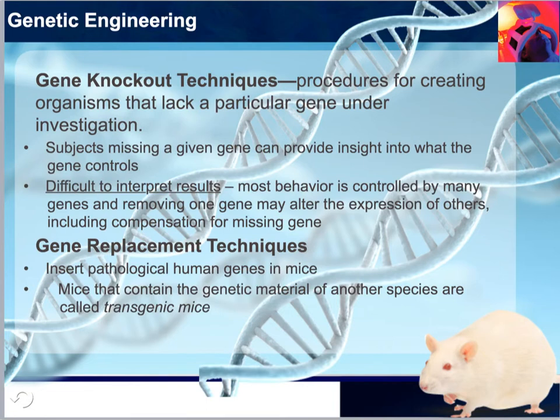A study done in 2008 consisted of creating transgenic mice by inserting a defective human gene that had been found to be associated with schizophrenia in a Scottish family with a particularly high incidence of the disorder. The transgenic mice displayed a variety of cerebral abnormalities, such as reduced cerebral cortex and enlarged ventricles, and abnormal behaviors that were reminiscent of human schizophrenia. Treating neurological disease by replacing faulty genes in patients suffering from genetic disorders is exciting, but it remains an as-yet unrealized goal.